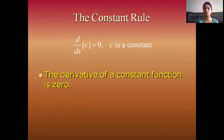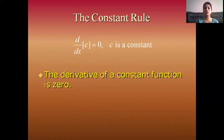Second rule: the constant rule. Here c is a constant. When you apply the derivative of c with respect to x, everyone knows that the derivative of a constant function is always 0. So the derivative of c with respect to x is 0.